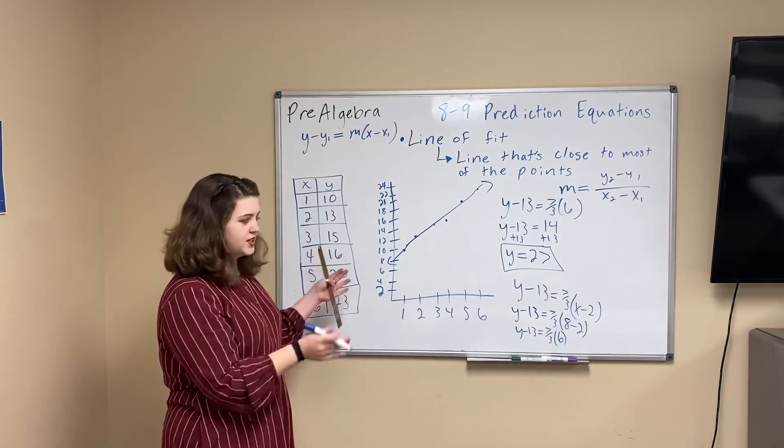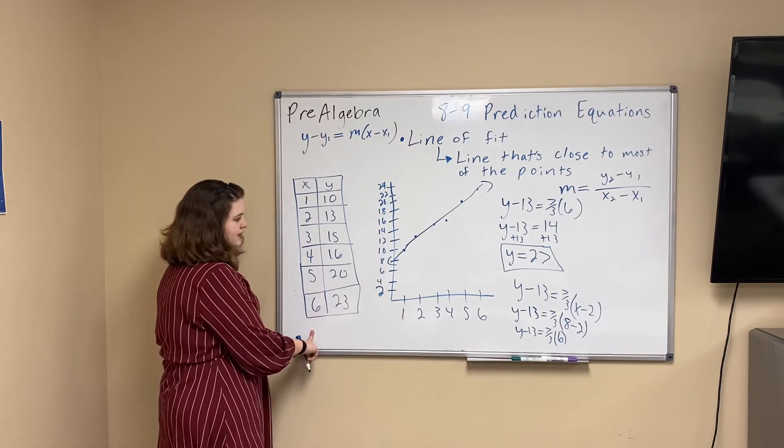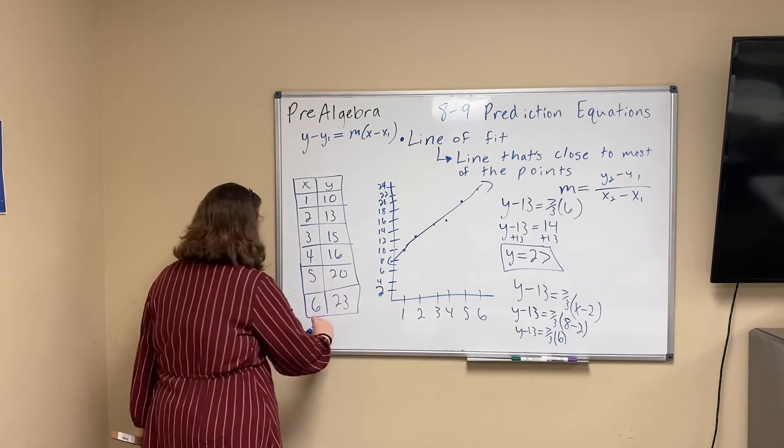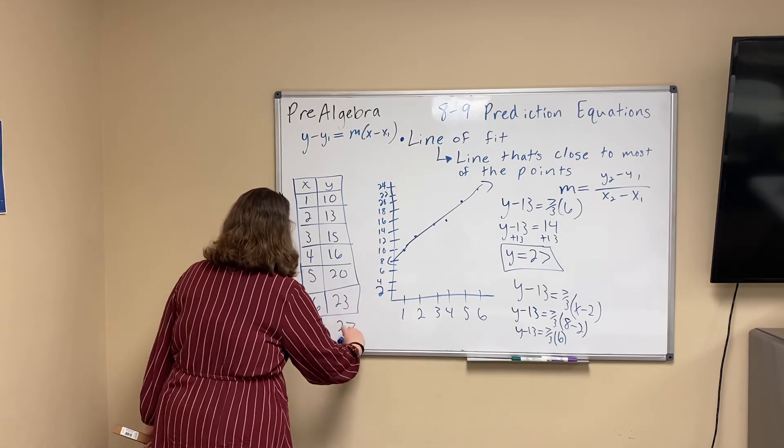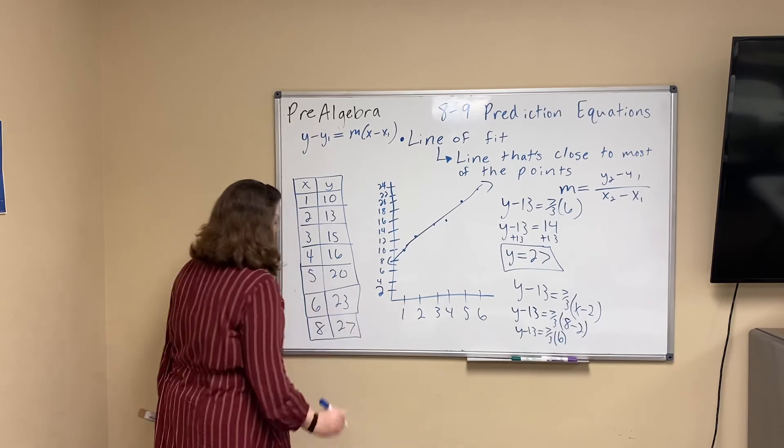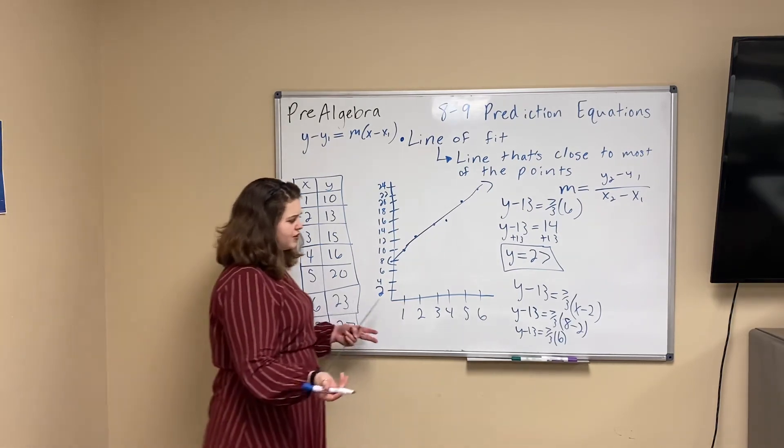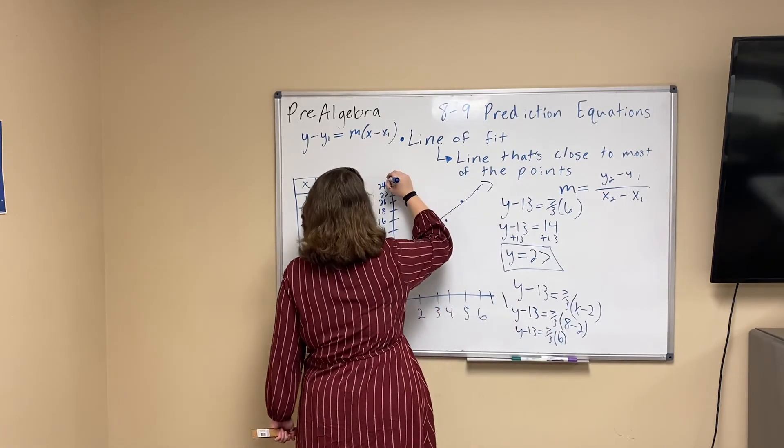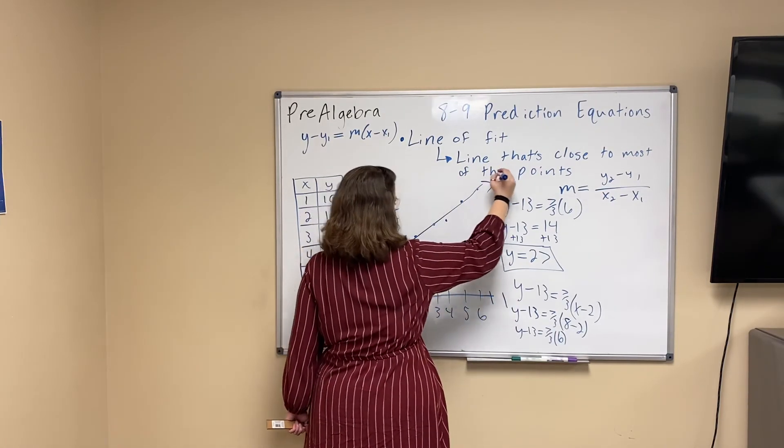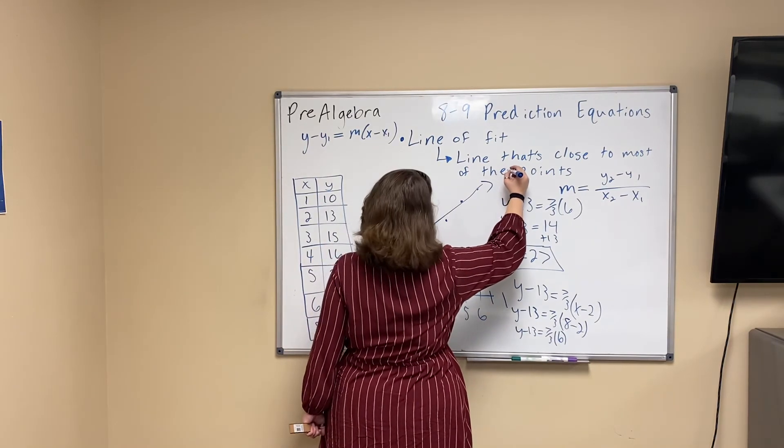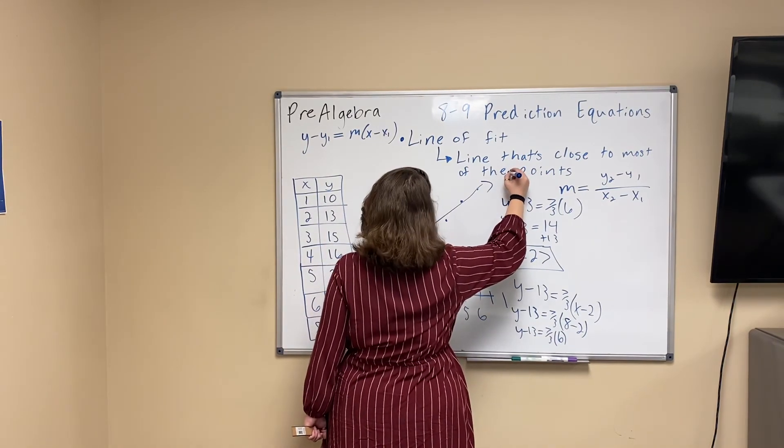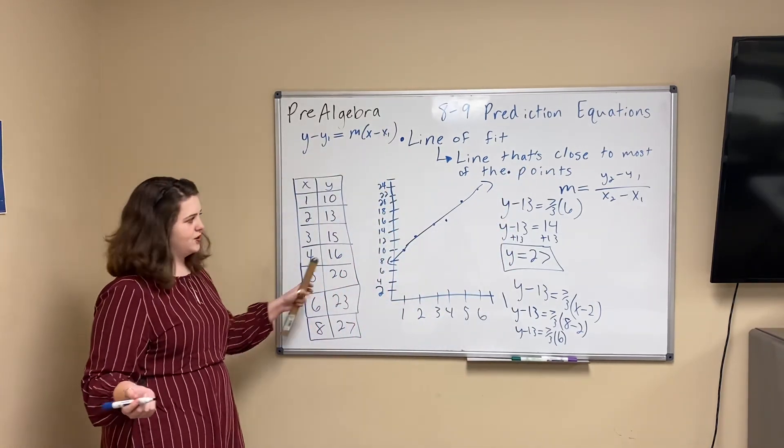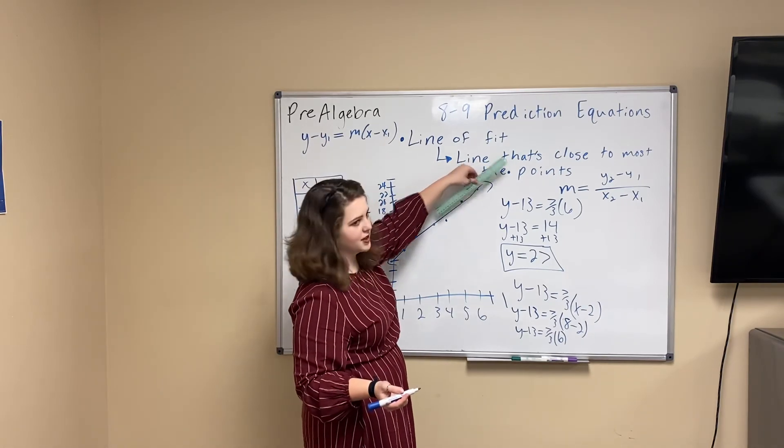So our prediction is going to be, in year 8, whatever we're measuring is going to be 27. And you can usually tell, if you continue your graph, and put this up at 24, 27. It should still look like a continuation of your line. That's how you'll know you've picked a good line of fit, is if this is in line with it.